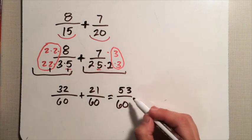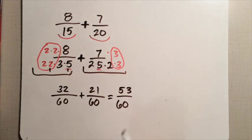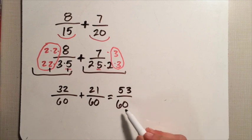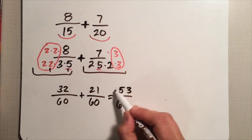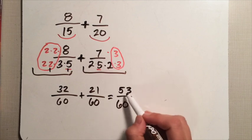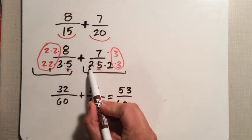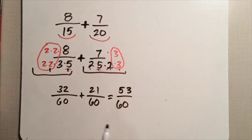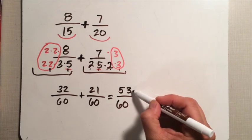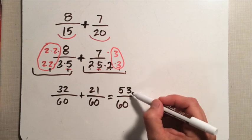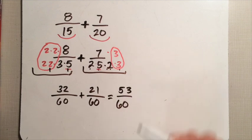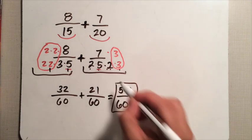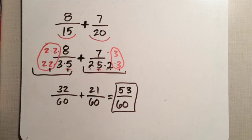Now the question is: can I simplify fifty-three sixtieths any further? I know my sixty is made up of only factors of two, three, and five — those are the only numbers I have to check the numerator for. Obviously there's no factor of two: fifty-three doesn't end with an even number. There's no factor of five: doesn't end with a five or a zero. And five plus three is eight, so there's no three either. I'm perfectly confident that fifty-three sixtieths is completely simplified.